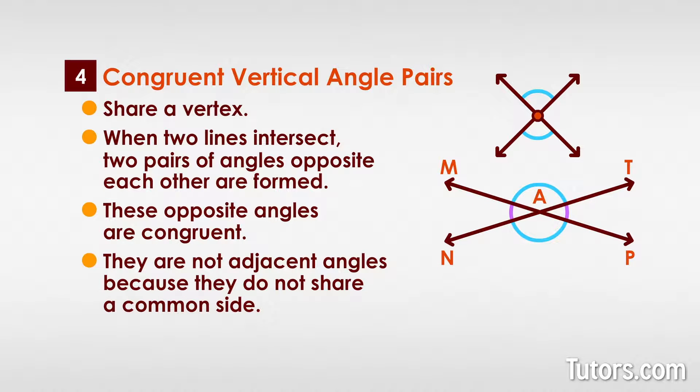Looking back at our intersecting lines from before, we see that angle M-A-N and angle T-A-P share a common vertex, point A, but do not share a common side. They are vertical angles and they are congruent. The same is true of angle M-A-T and angle P-A-N.